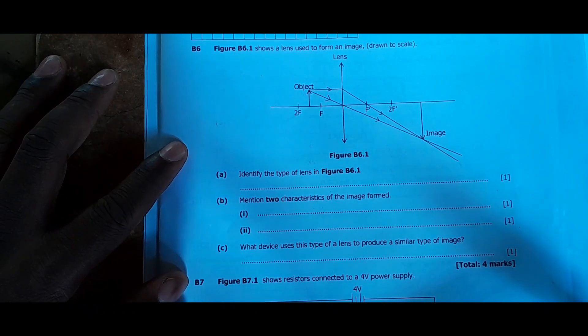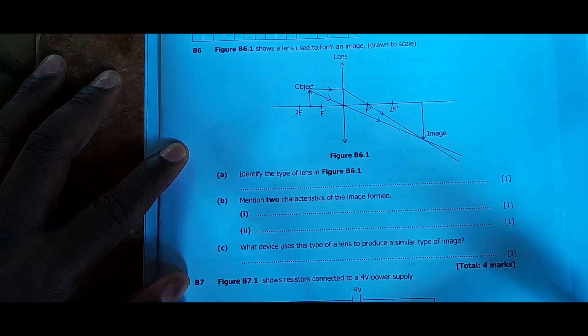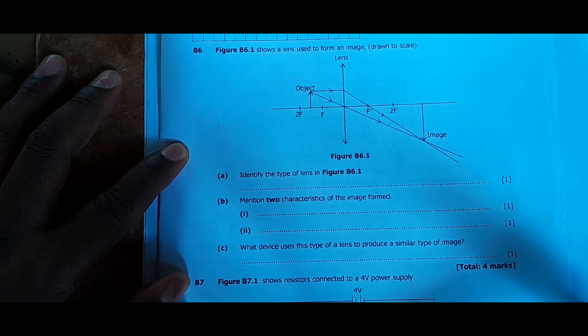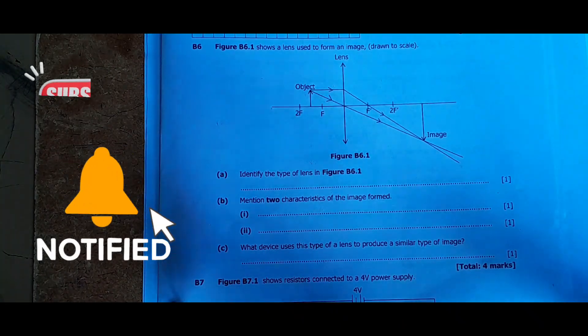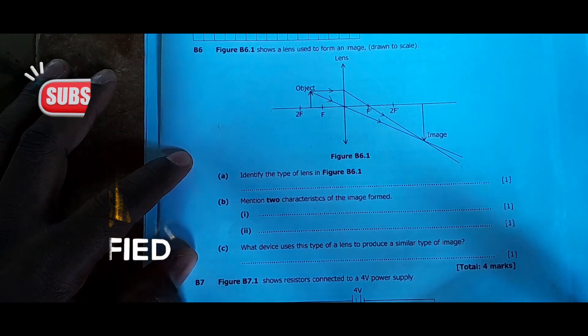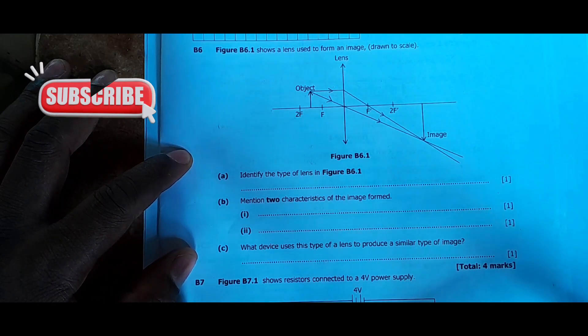We have this question. Figure B6.1 shows the lens used to form an image drawn to scale. Identify the type of lens. So this one is pretty simple. When you see rays meeting at some point, then you need to know you're dealing with a converging lens.